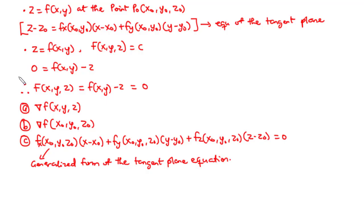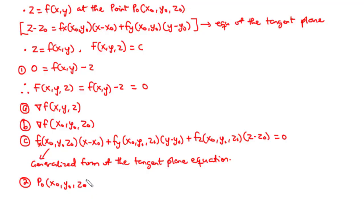After discussing the equation of the tangent plane, let's move on to the equation of the normal line. To find the equation of the normal line, we need to obtain a point on the line. We consider the point P0 with components x0, y0, z0 — this point is a point on the line. Also, considering that the gradient vector is normal to the surface, it is going to be parallel to the line.